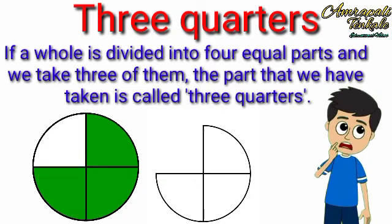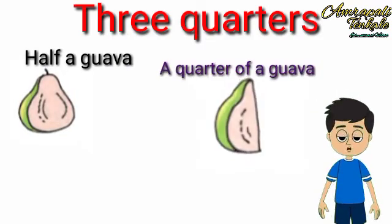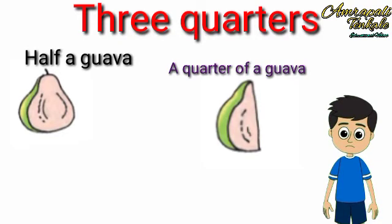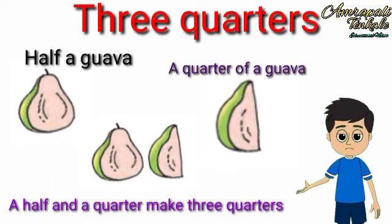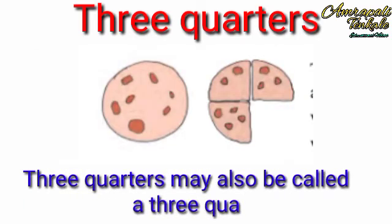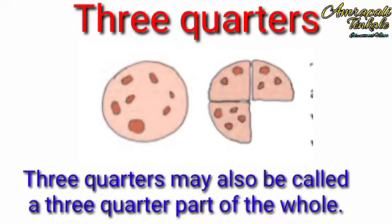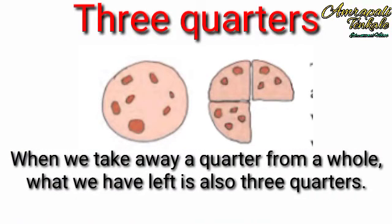See the pictures: a half, a quarter — a half and a quarter make three quarters. Three quarters may also be called a three quarter part of the whole. When we take away a quarter of a whole, what we have left is also three quarters.